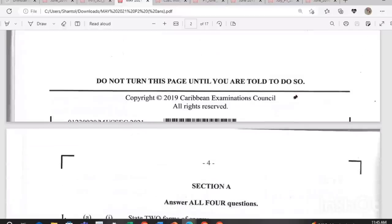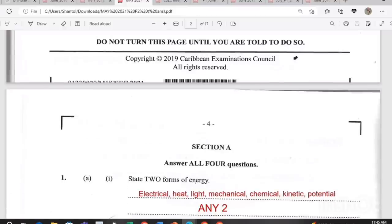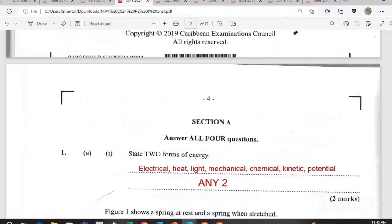Question section A, answer all four questions. State two forms of energy. Any two forms of energy can be stated here. I have electrical, heat, light, mechanical and chemical. Kinetic and potential energy are the two main types and from kinetic and potential you can get all the other forms of energy. If in the exam you don't remember any of the others, kinetic and potential are always a safe bet.